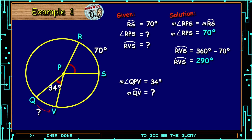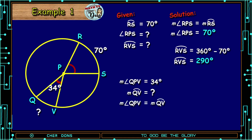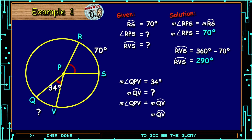Going back to the Central Angle Intercepted Arc Postulate: the measure of Angle QPB is equal to the measure of its intercepted arc, arc QB. So we get 34 degrees.